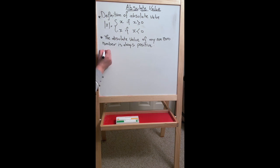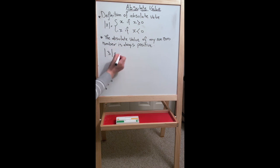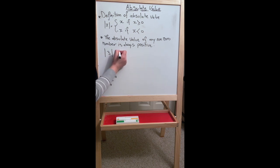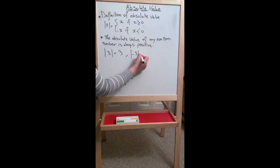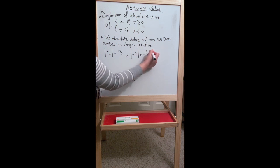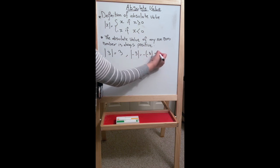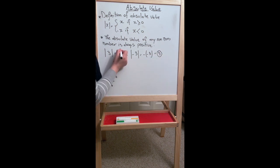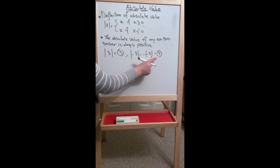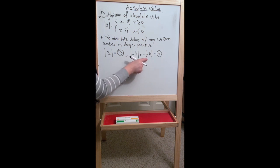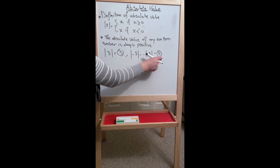For example, the absolute value of 3 — since 3 is positive, it stays the same, so the answer is 3. The absolute value of -3 — since -3 is negative, we write minus(-3), which equals 3. We usually skip that step and write directly that the absolute value of -3 is equal to 3.